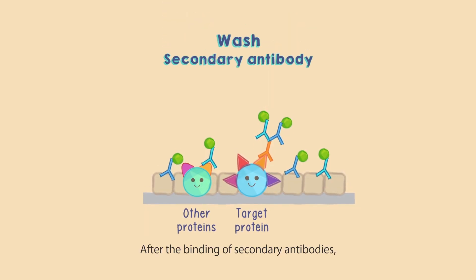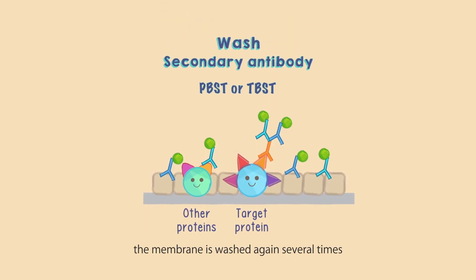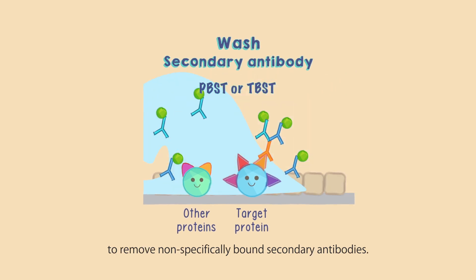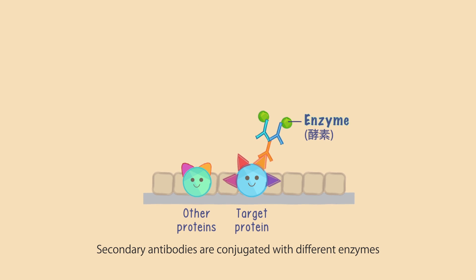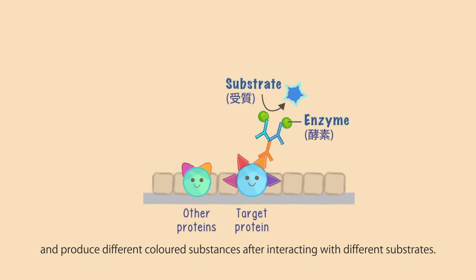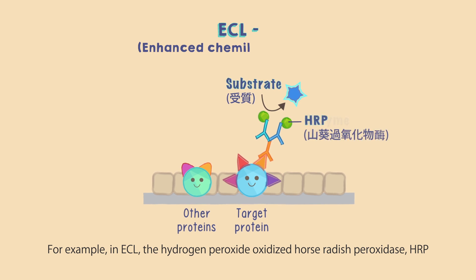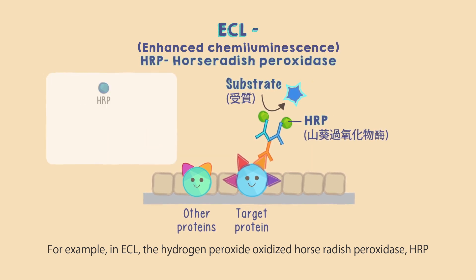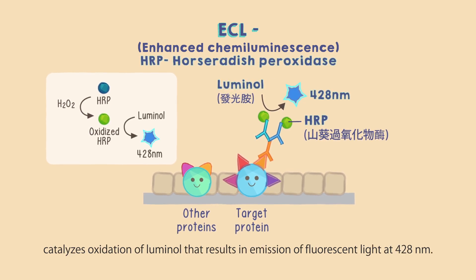After the binding of secondary antibodies, the membrane is washed again several times to remove non-specifically bound secondary antibodies. Secondary antibodies are conjugated with different enzymes and produce different colored substances after interacting with different substrates. For example, in ECL, hydrogen peroxide oxidized horseradish peroxidase (HRP) catalyzes oxidation of luminol, resulting in emission of fluorescent light at 428 nanometers.